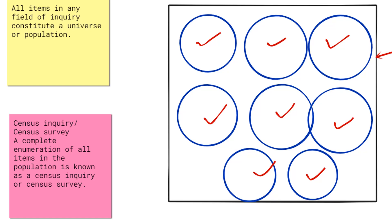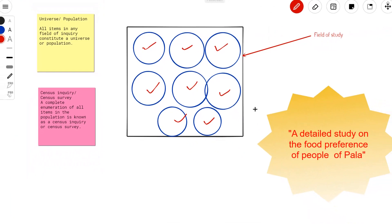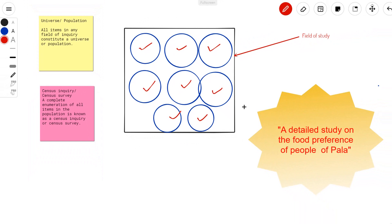But practically speaking, it may not be possible to do a census inquiry. Suppose our study is about the preference of a particular dish by the people of Pala. Then we will have to go to each and every person living in Pala and register their preferences to conduct the study, which will be very time-consuming and very difficult to conduct. That is the disadvantage of census inquiry.